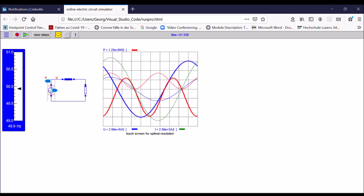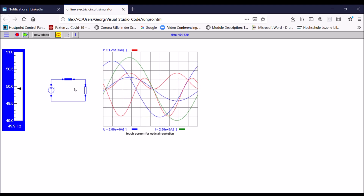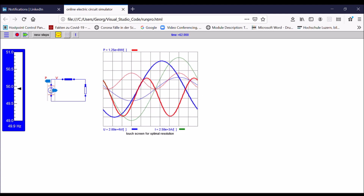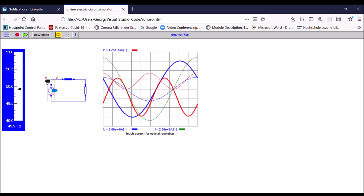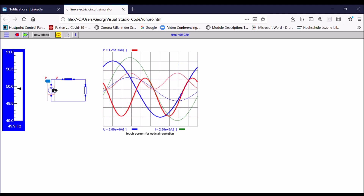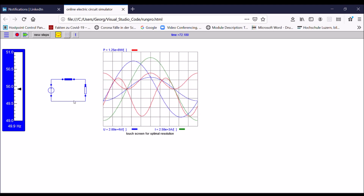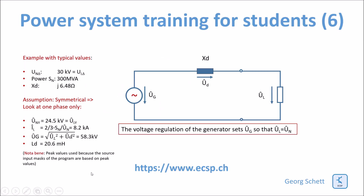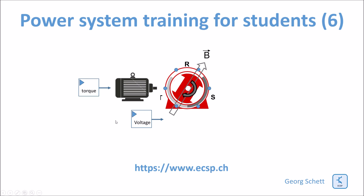In order to control and adjust the load of the generator, you need two things. First, you need a controller for the speed of the generator — a torque control. At the same time, you also need a voltage control of the generator. Only if these two things are available can you control the power output of a generator. To achieve 100 MW output, I need an internal induced voltage of 58.3 kV peak — more than double the nominal peak output — raised by the generator voltage control, plus a torque control to keep the generator at 50 Hz despite the 100 MW output.